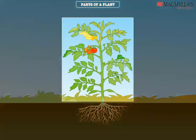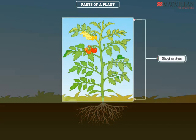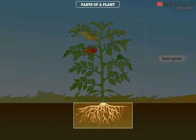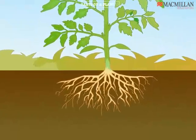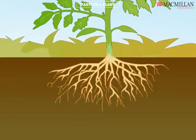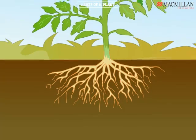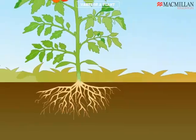What you see growing above the ground is the shoot system of the plant. And what you see growing under the ground is the root system of the plant. Can you see the network of roots? In most plants, roots grow under the soil.